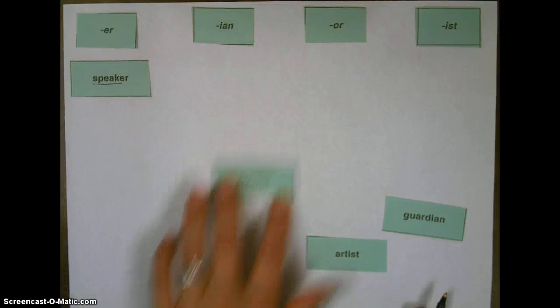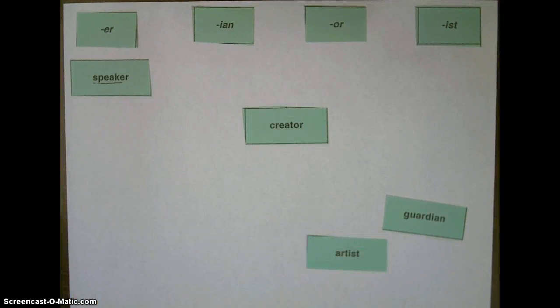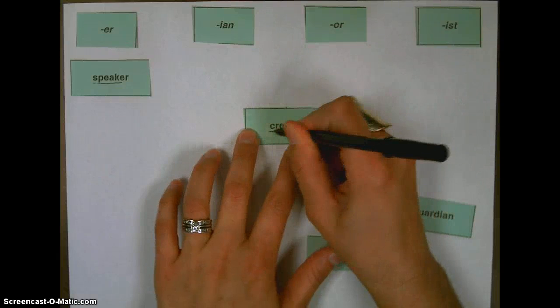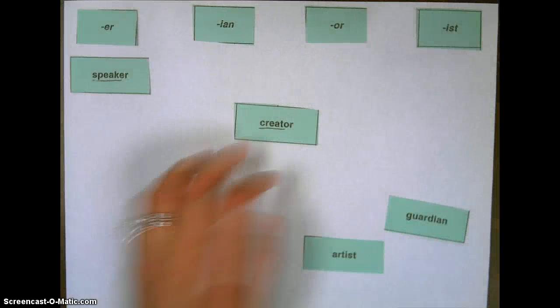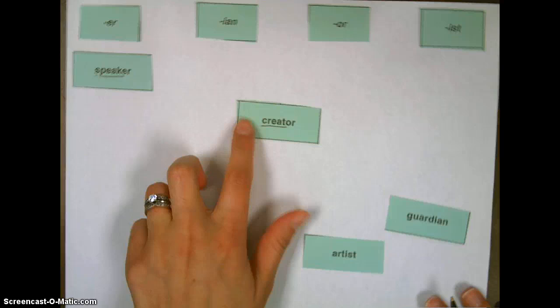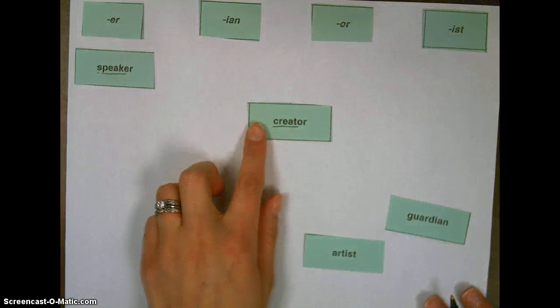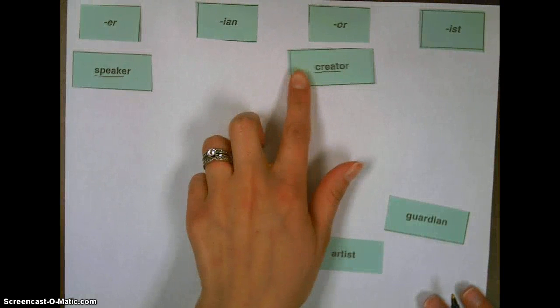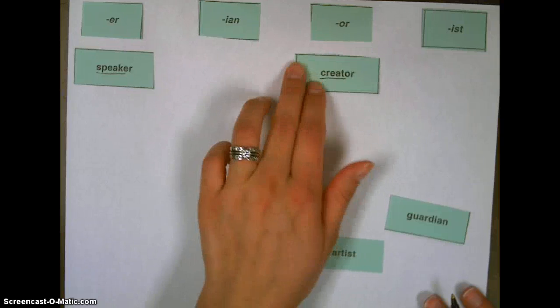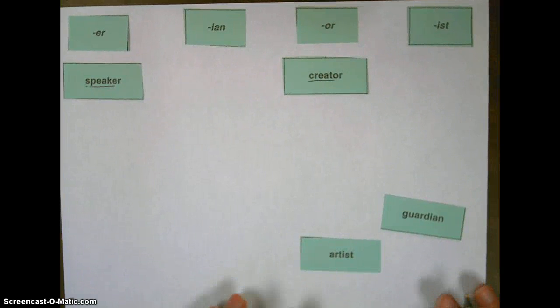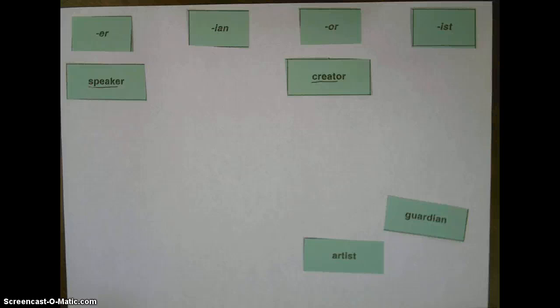Next, we have the word creator. And again, our base word is create, which adding the suffix changes the spelling. But our base is create, and adding that or, we'll put that in the or column, adding that or changes it from something that's being done, which is create or creating something. When we add that suffix or, that changes it to a creator, which is a person who creates.